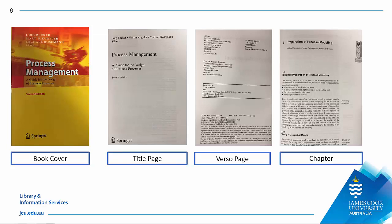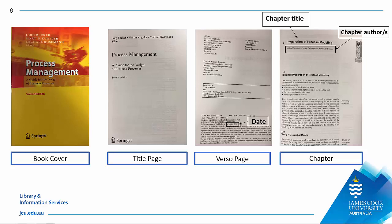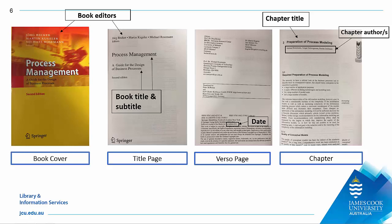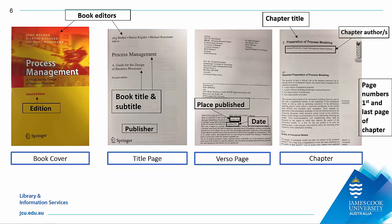Now we'll move on to referencing a book with editors — that is, a book where each chapter has its own author or authors. When you reference such a book, you need the following information: the author or authors of the chapter, the date of publication of the book, the title and subtitle of the chapter, the names of the editors, the title and subtitle of the book, the edition number, the page numbers of the chapter, and the place of publication and the name of the publisher. If you use more than one chapter from an edited book, you must reference each chapter separately.